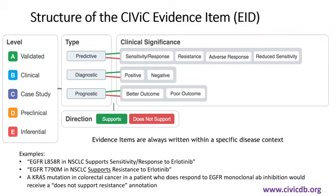Level D evidence is curated from preclinical work conducted in cells, xenografts, animal models, or other types of laboratory results. Finally, Level E evidence provides inferential support for the described variant and can be derived from in silico predictions, cell lines, animal models, or human studies. This could mean that the variant was not ever actually measured or that the results from the study do not directly evaluate the claims made by the evidence item. Examples of all these evidence types are available in the CIVIC HELP document.